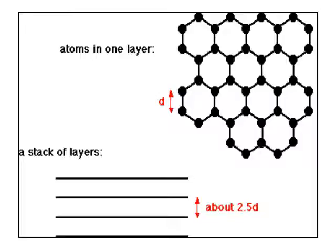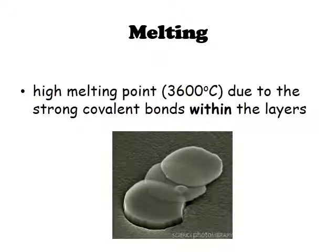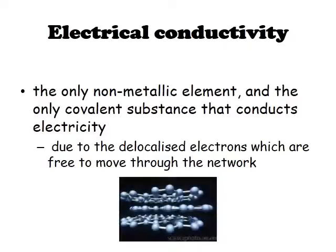The 2D layers in graphite, where one carbon is bonded to three adjacent carbons, are stacked in layers. Because these layers can move freely due to the delocalization of the electrons, graphite can be used as a lubricant. It can also be used as a conductor of electricity because of the delocalized electrons that are free to move. In terms of melting, 3D covalent solids have high melting points due to strong covalent bonds. Graphite is the only non-metallic element and the only covalent substance that conducts electricity.